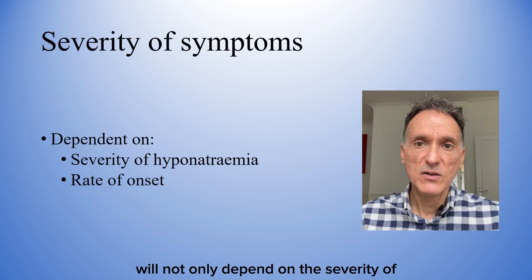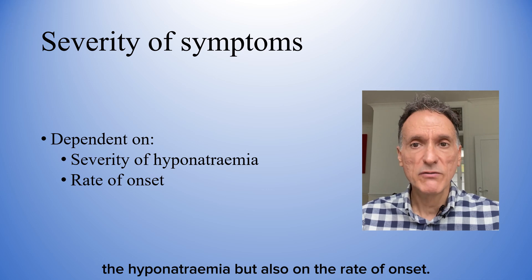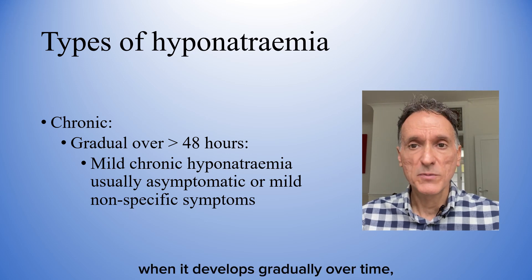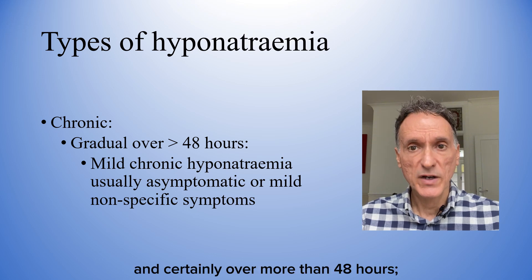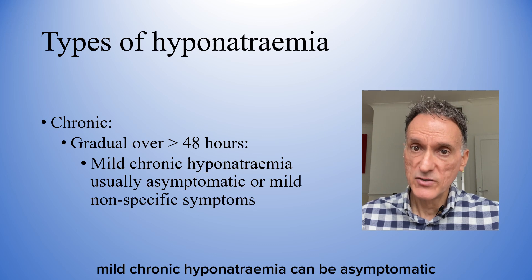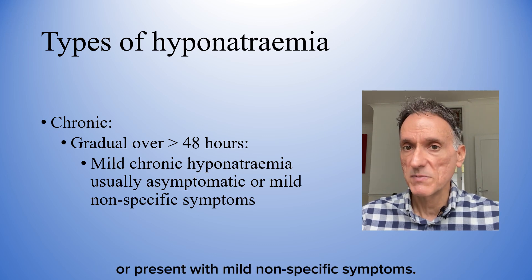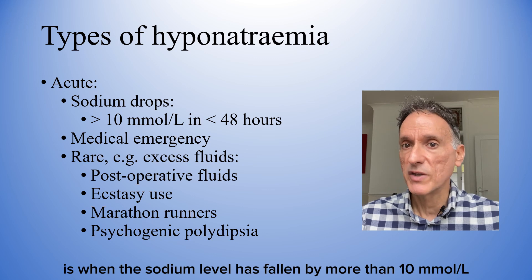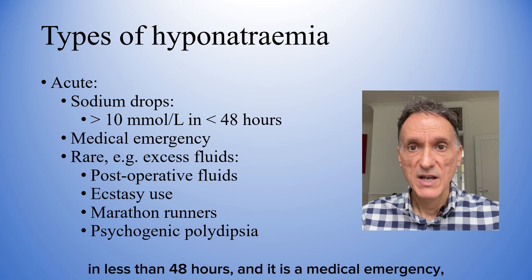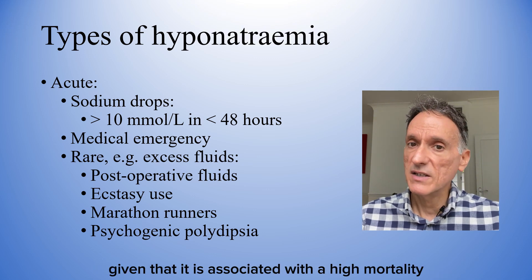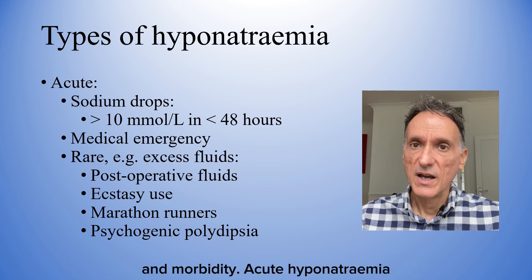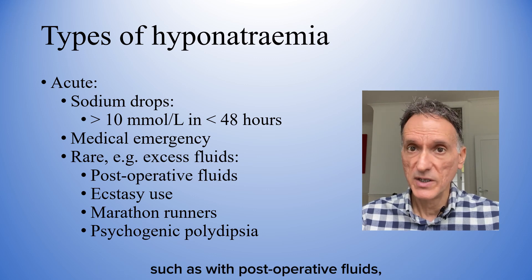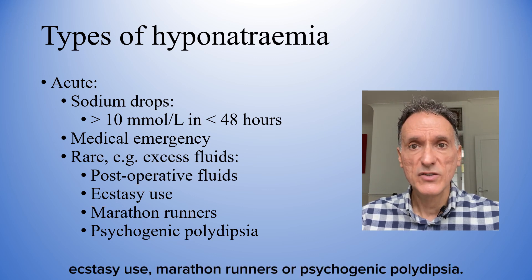The severity of symptoms will not only depend on the severity of the hyponatremia, but also on the rate of onset. Hyponatremia can be classified as chronic, when it develops gradually over time — certainly over more than 48 hours. Mild chronic hyponatremia can be asymptomatic or present with mild nonspecific symptoms. Acute hyponatremia is when the sodium level has fallen by more than 10 mmol per litre in less than 48 hours, and it is a medical emergency, given that it is associated with high mortality and morbidity. Acute hyponatremia is rare and most often due to marked water intake, such as with post-operative fluids, ecstasy use, marathon runners, or psychogenic polydipsia.